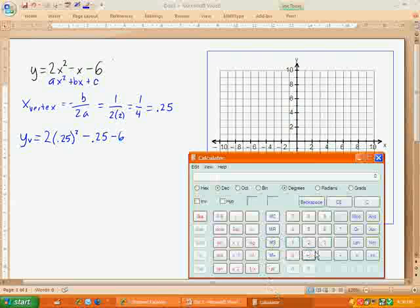And we're going to go 0.25 squared. Alright. And then we will multiply that by 2. And then we're going to subtract the 0.25, and then we will subtract 6.